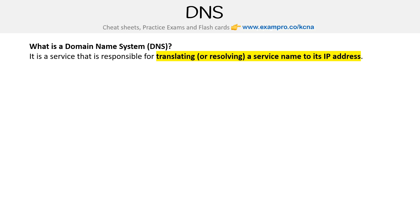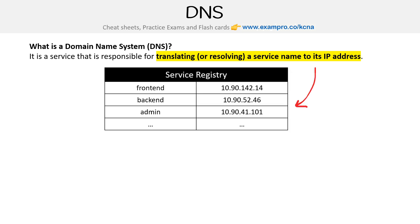For domain name system, it's not uncommon to have a table of things that point to things. So we would have a service registry. And so in the context of Kubernetes, this would be the service name, and this would be the static IP address that is assigned to it.